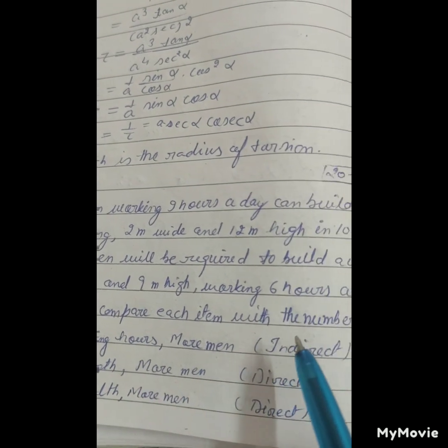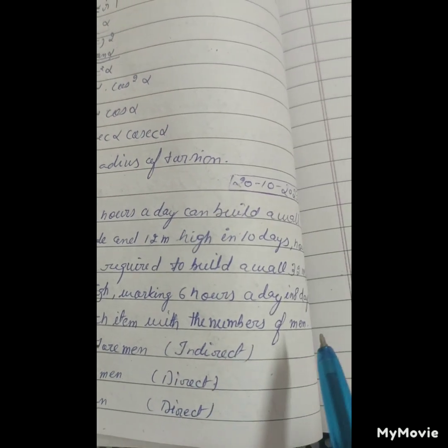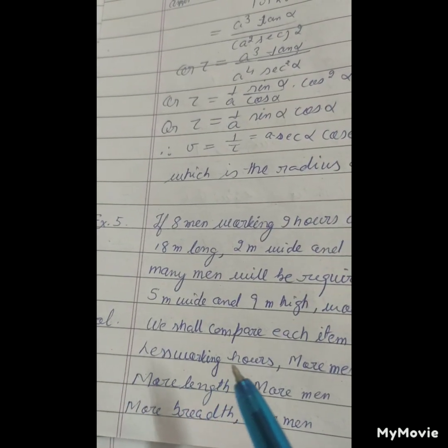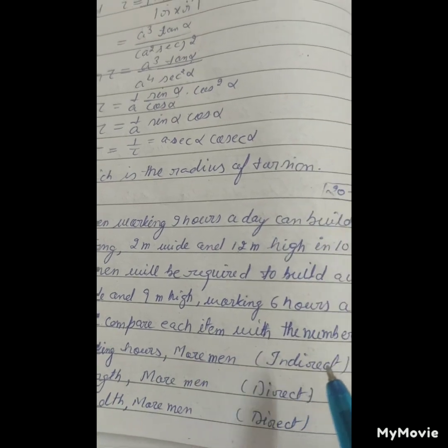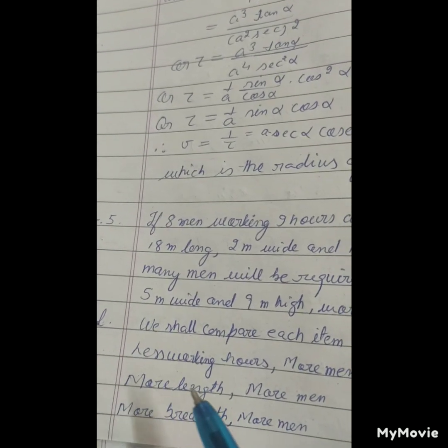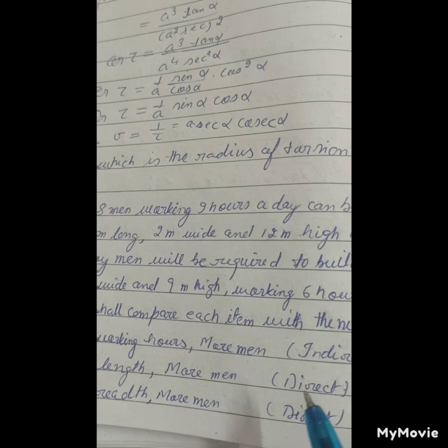We shall compare each item with the number of men. Less working hours means more men - indirect. More length means more men - direct.